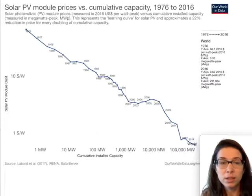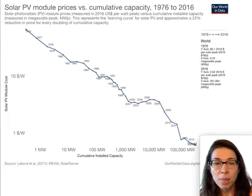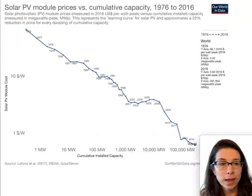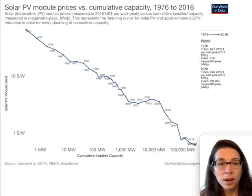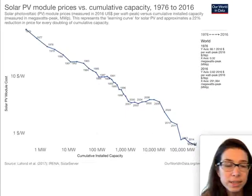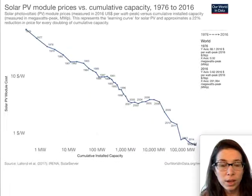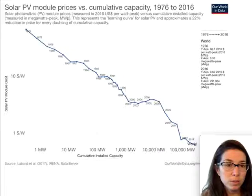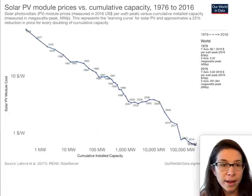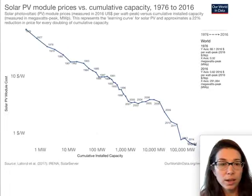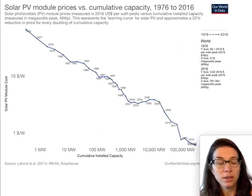As we invest more in renewable energy technologies, the prices are dropping. The cost of solar panels has fallen dramatically — from around the equivalent of about $20 per unit of capacity in 1976 down to a fraction of a dollar today. These technologies are becoming much more affordable year after year.